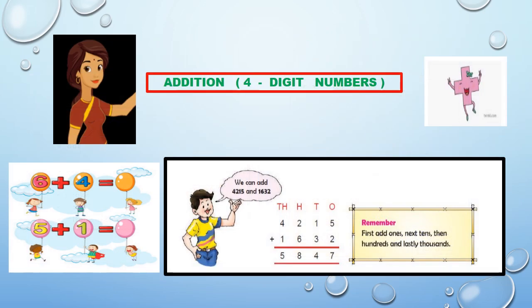In previous classes, you have learned about Addition of 2 or 3-digit numbers. But now, let us learn about Addition of 4-digit numbers. First of all, you arrange the addends in columns: ones, tens, hundreds, thousands.